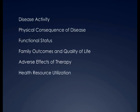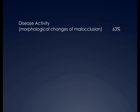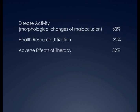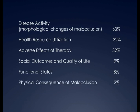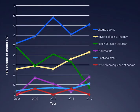From the 133 RCTs included in our review, we found that 63% of trials incorporated outcomes measuring morphological changes of malocclusion, 32% were concerned with outcomes relating to health resource utilisation, 32% with adverse effects of treatment, 9% with quality of life outcomes, 8% with functional status, and 2% with physical consequence of malocclusion. The domain of disease activity was consistently the highest represented domain across the five-year period, with all other domains being represented in less than 50% of the studies.